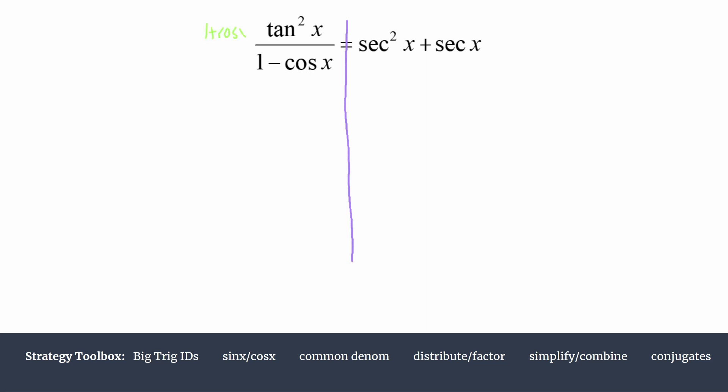So here it is. We can go ahead and write that on the next line. We'll really be working on simplifying the denominator. So we're leaving the numerator alone. It's tangent squared x times 1 plus cosine x all over.